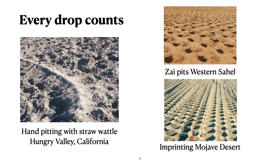Every drop of water counts, and one of the key steps is catching whatever you can. Here we have a picture of a hand-pitted area with a straw wattle included to reduce erosion risk of gullying. Zai pits have traditionally been used in the Western Sahel and popularized in Burkina Faso. And imprinting an area in the Mojave Desert that had been completely denuded of plants — you can choose the size of water catchment based on the types of rainfall you have, the type of soil, and your ultimate goals.